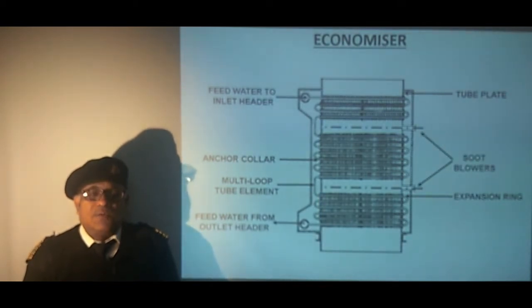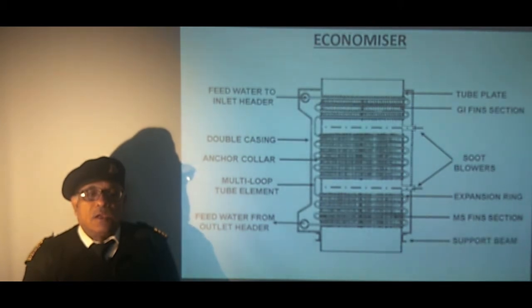We have the soot blowers for keeping the surfaces clean. We have mild steel fins in the lower part of the economizer. And we have galvanized iron fins in the upper part of the economizer where water temperature is low. We have the double casing. So the ends are not heated. We have the support beam on which the economizer is mounted.